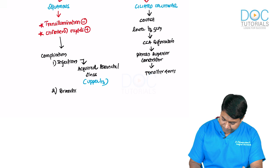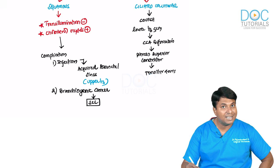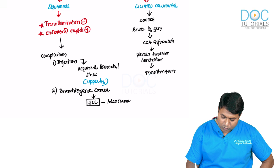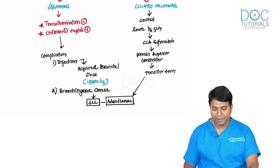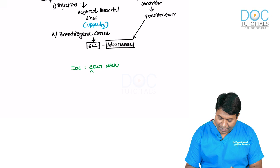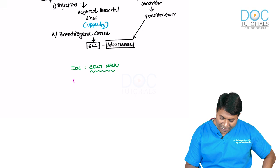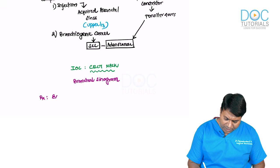Another complication of branchial cyst is branchiogenic carcinoma — a squamous cell cancer. If arising from the branchial sinus remnant, it can also be adenocarcinoma. Investigation of choice is CECT neck. To identify the sinus tract, a branchial sinogram can be done to show the track and where it ends.